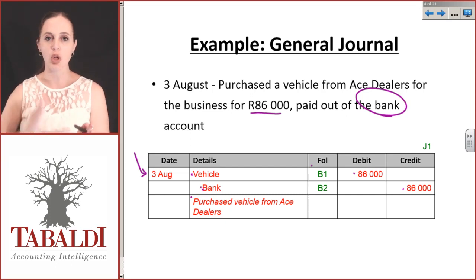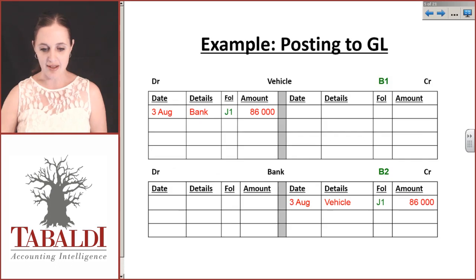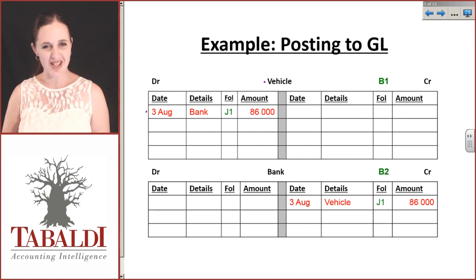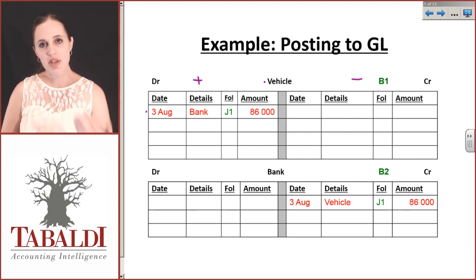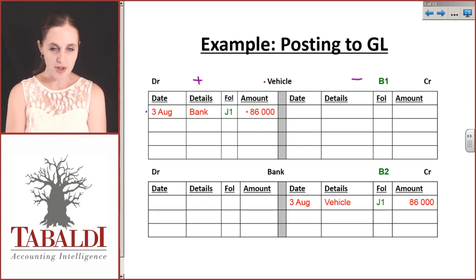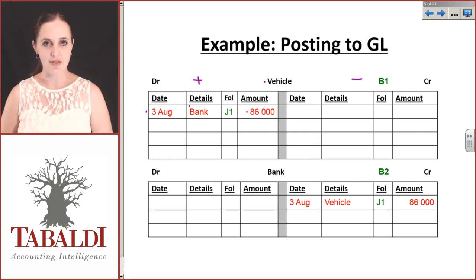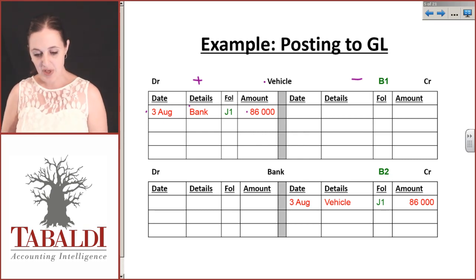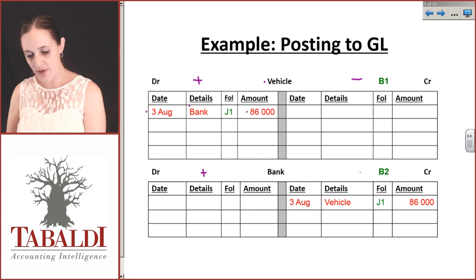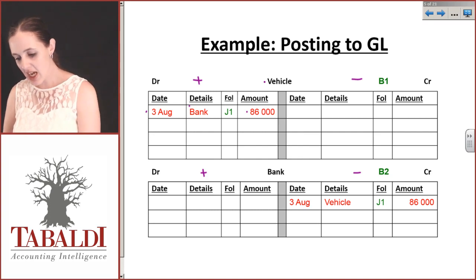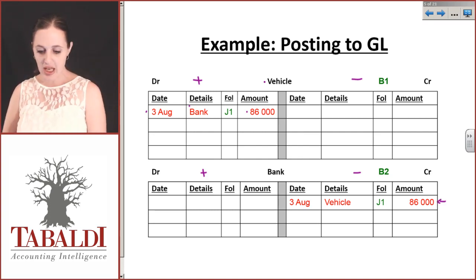When we post this to the general ledger, which will obviously be our next step, we'll take the vehicle account because we bought a vehicle, and we'll debit that because it's an asset. Remember, assets increase on the debit side and decrease on the credit side. So our vehicle is an asset and we've debited 86,000 Rand, but you can only see half the transaction here. To see the actual credit we have to go all the way to the bank account. Bank is also an asset and you can see that we've taken 86,000 Rand out in order to buy a vehicle.